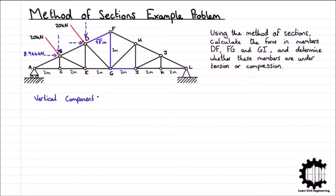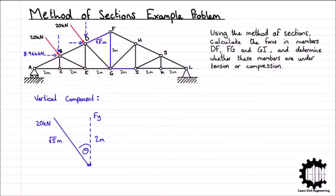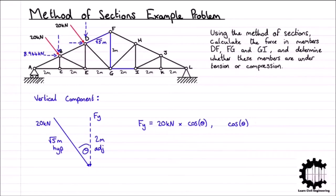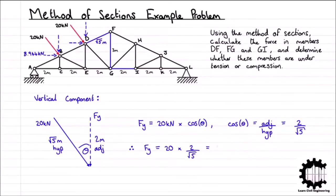For the vertical component Fy, we have the external force of 20kN over a length of root 5m, and Fy over a length of 2m, with angle theta still between the external force and the vertical plane. Therefore, Fy is the adjacent side and the external force is the hypotenuse. Using trigonometry, Fy = 20kN × cos θ, where cos θ = 2/√5, giving Fy = 17.889kN.